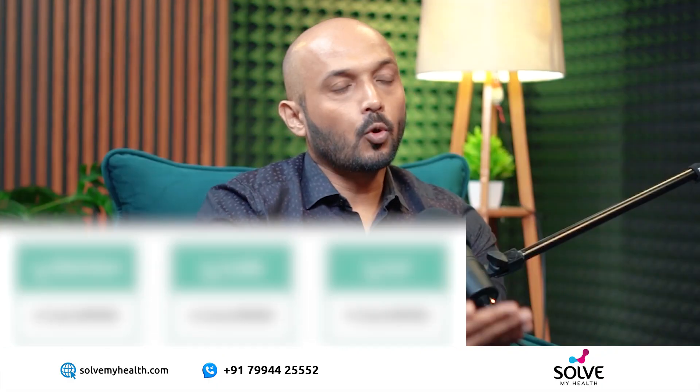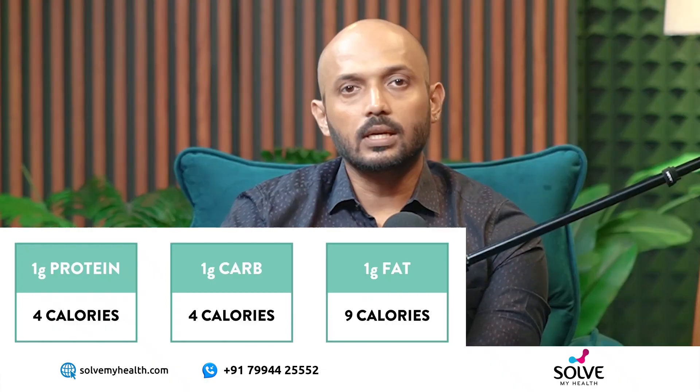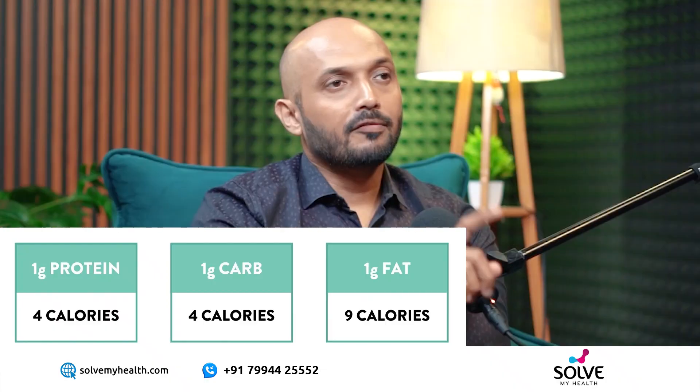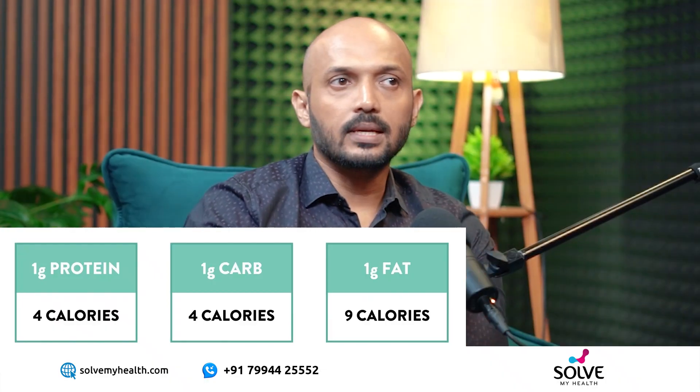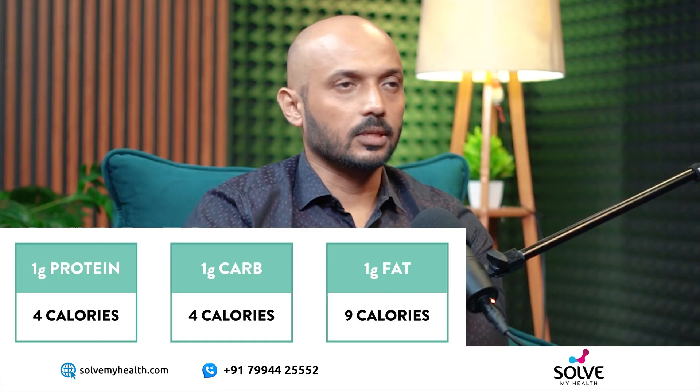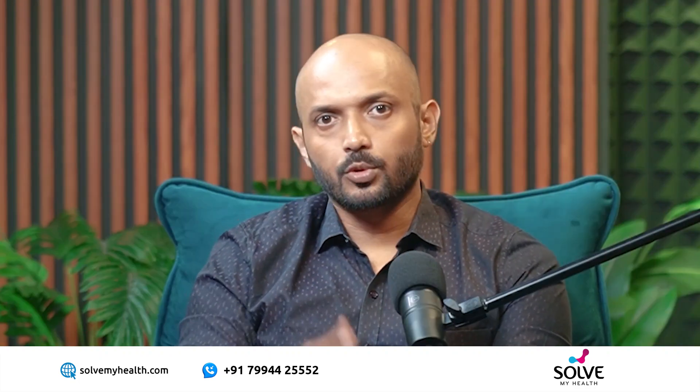1 gram of carbohydrate is 4 calories, and 1 gram of fat is 9 calories. If we store fat in our body, it is 9 calories per gram. This stored fat is called adipose tissue.